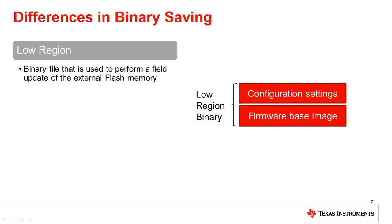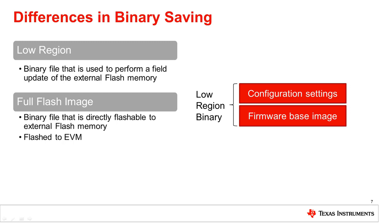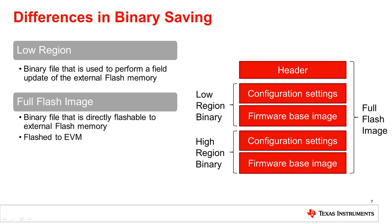The GUI allows you to save different types of binary files. The low-region binary can be used to perform a field update of the external flash memory and consists of the configuration settings in the firmware-based image. The full-flash image is directly flashable to the external flash memory. It has a header, the low-region binary, and a redundant copy of the low-region called the high-region.